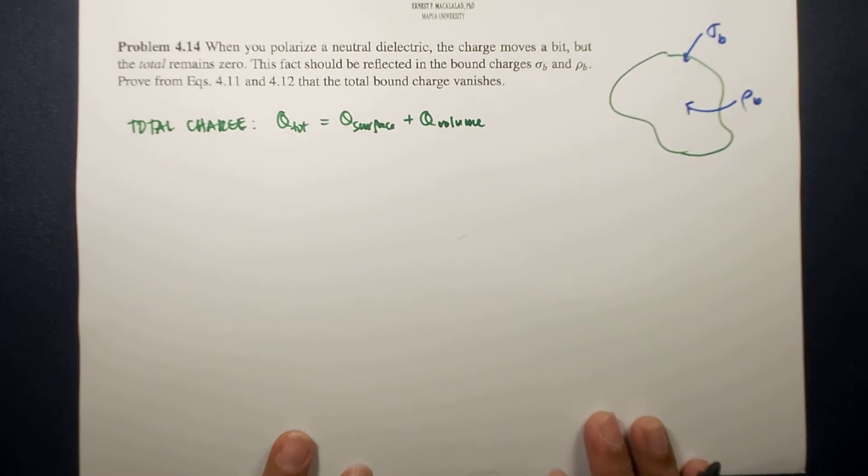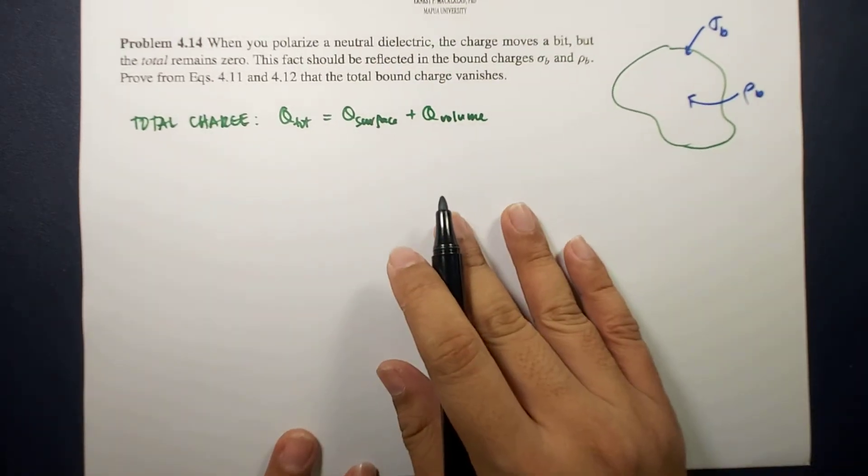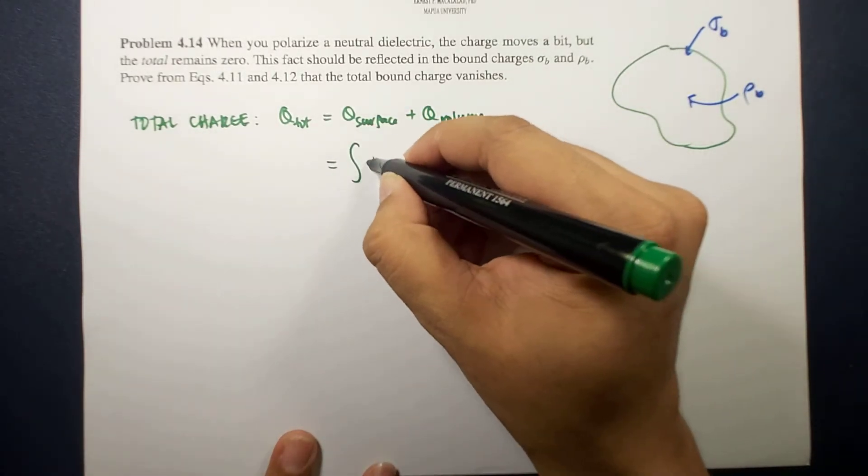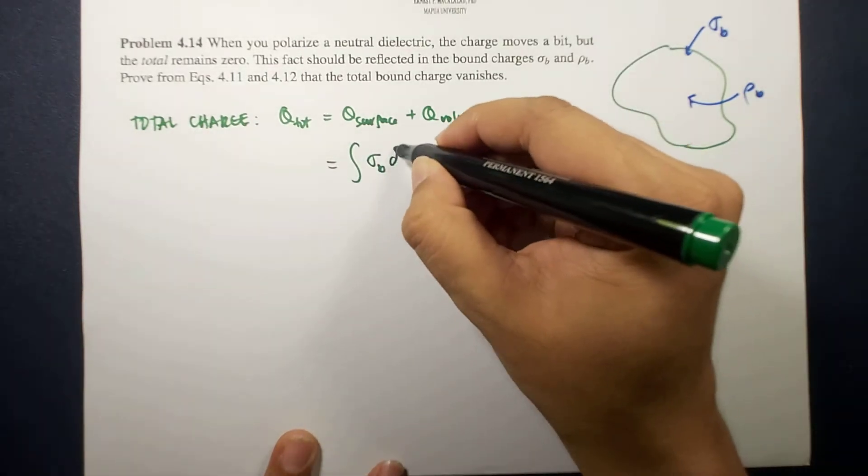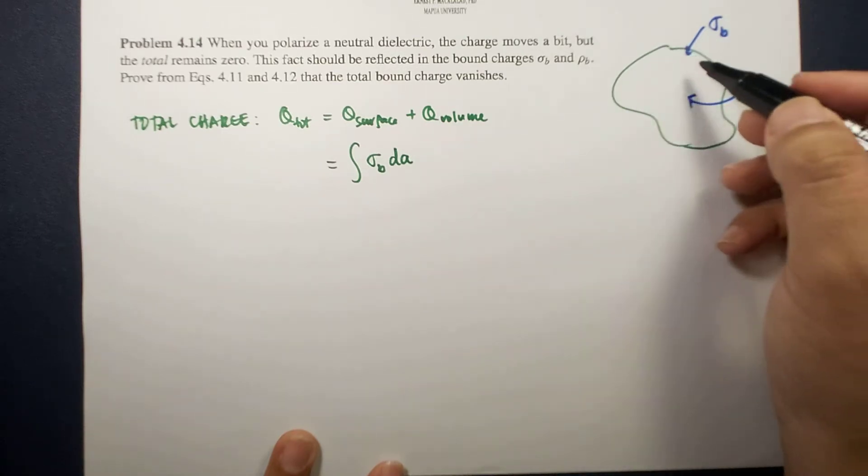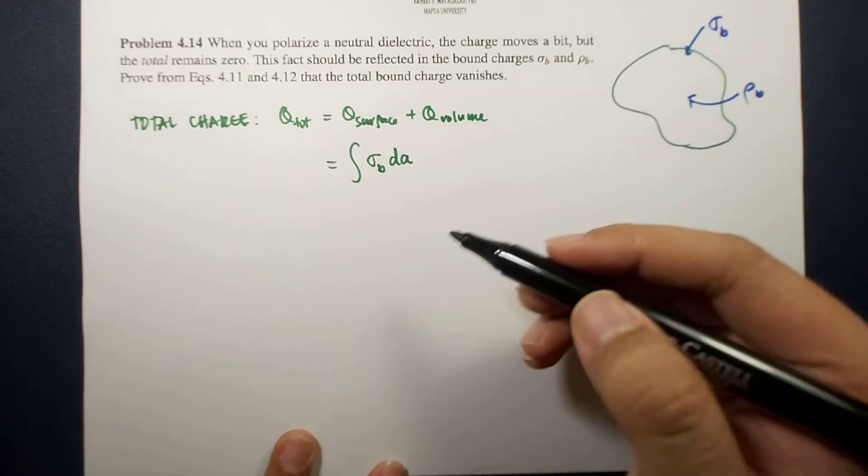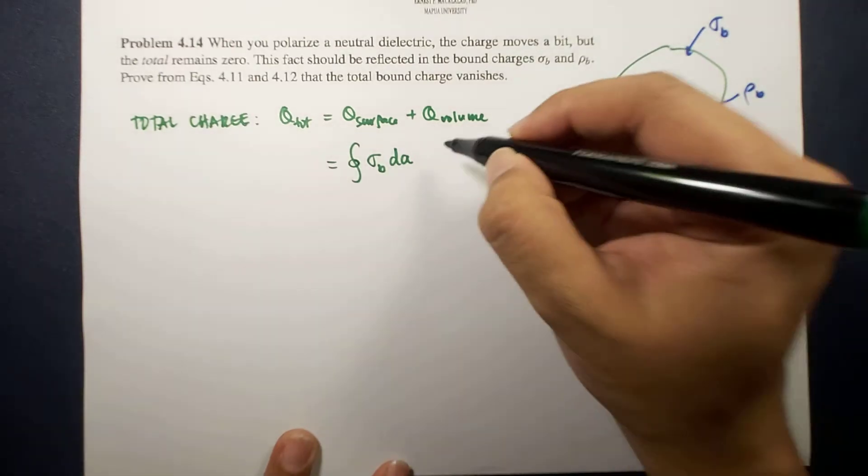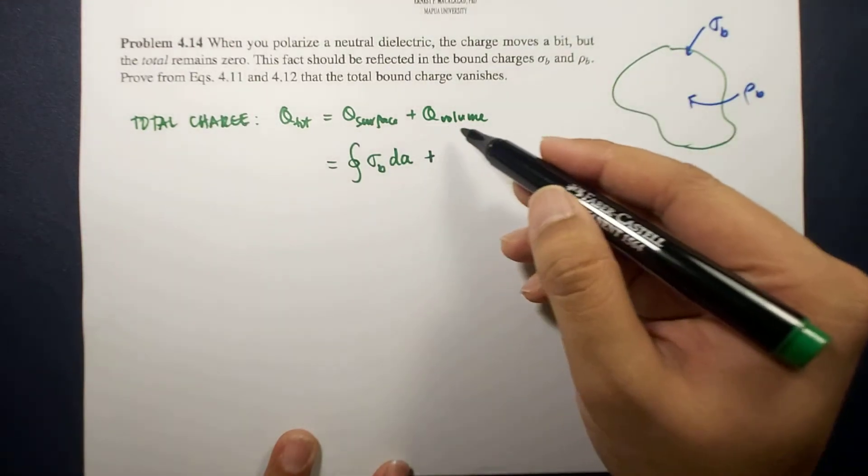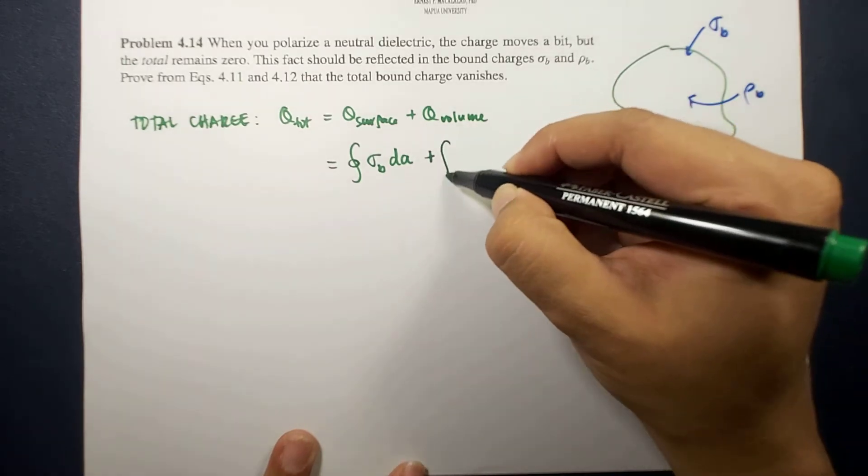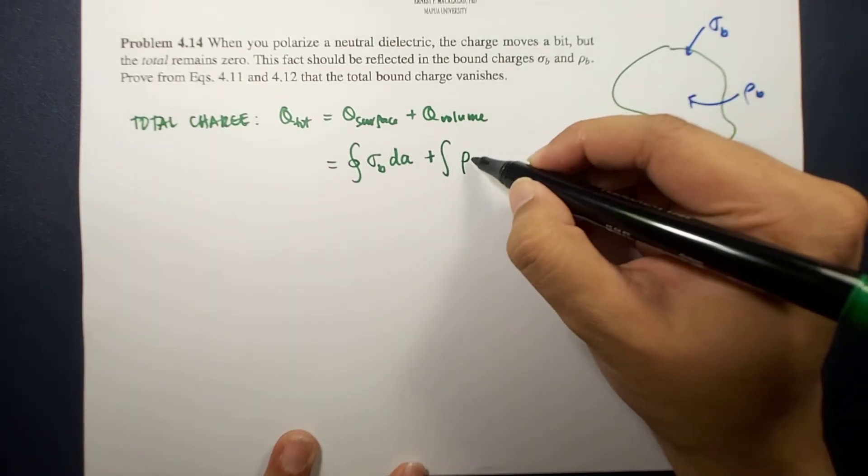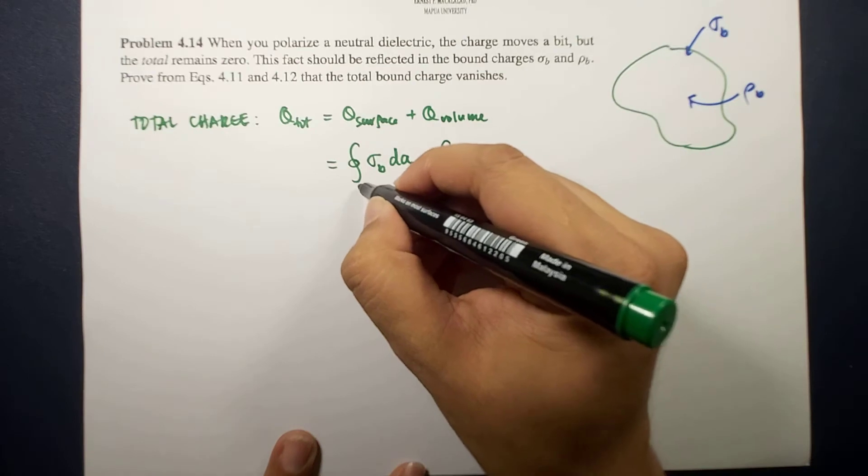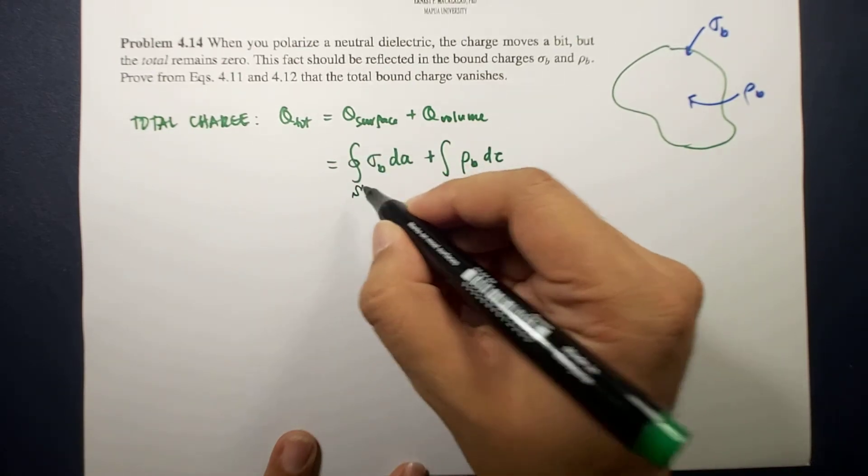This total charge is defined by the following expression: the total charge on the surface will be the integral of the charge density that is bound times your area vector. Because we're looking at the total volume, the surface that bounds the volume, this will be a closed integral. And this should be added to the total charge within the volume, which equals the integral of the bound charges within the volume times your volume element. This integral is within the volume.